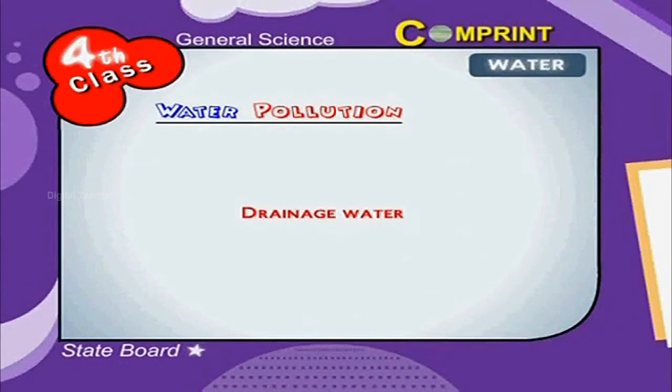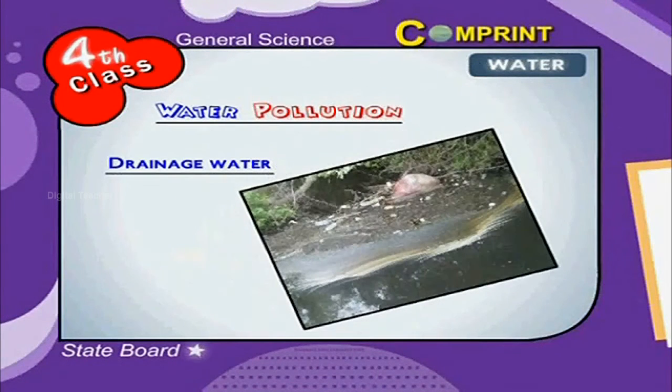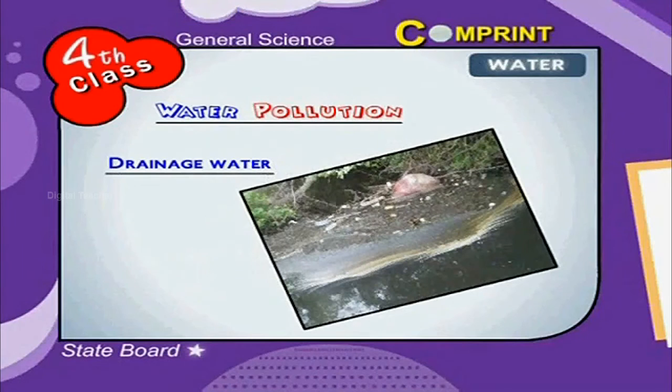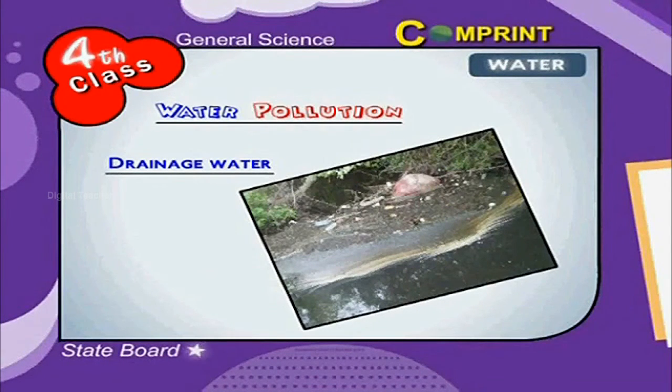Drainage Water. When the drains and sewage lines take the drainage water to rivers nearby, the water gets polluted.